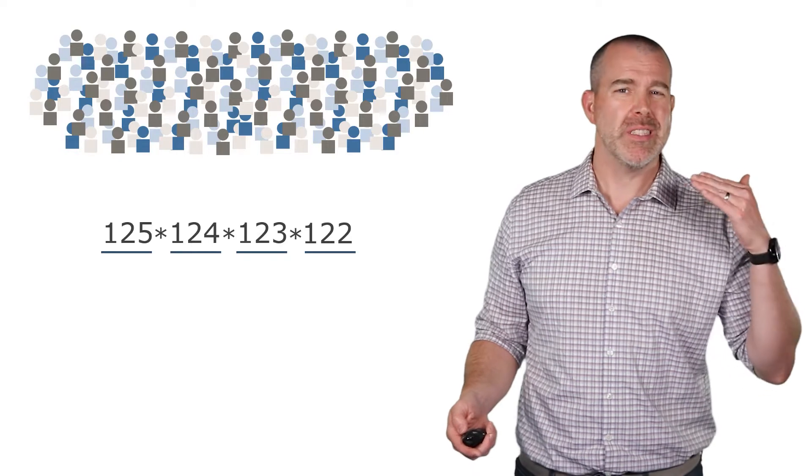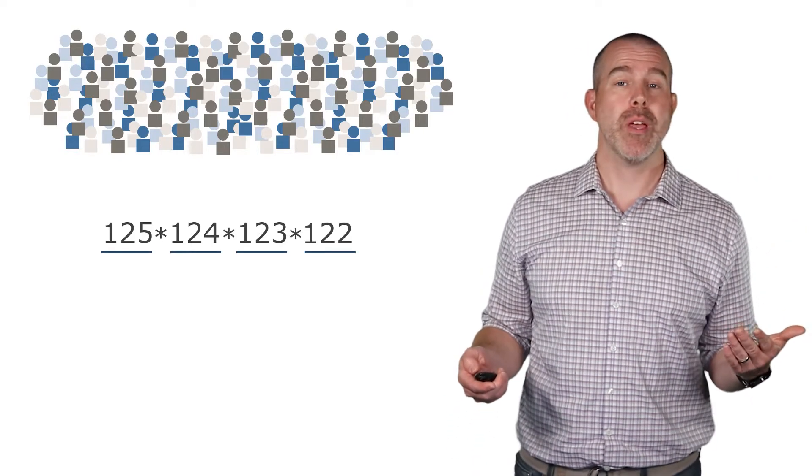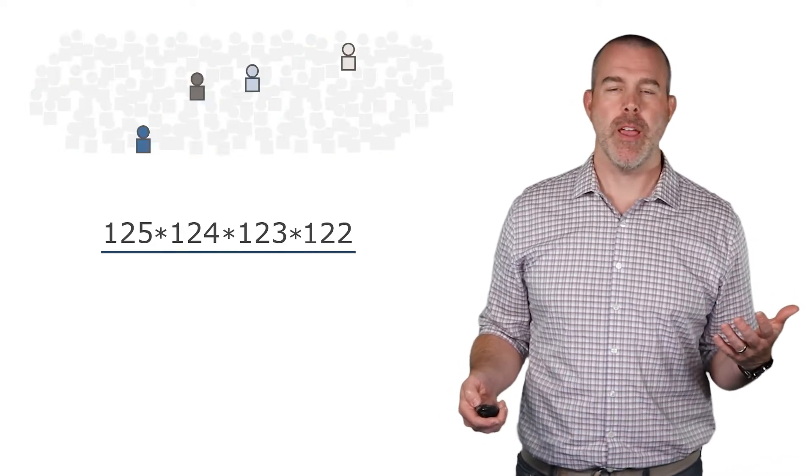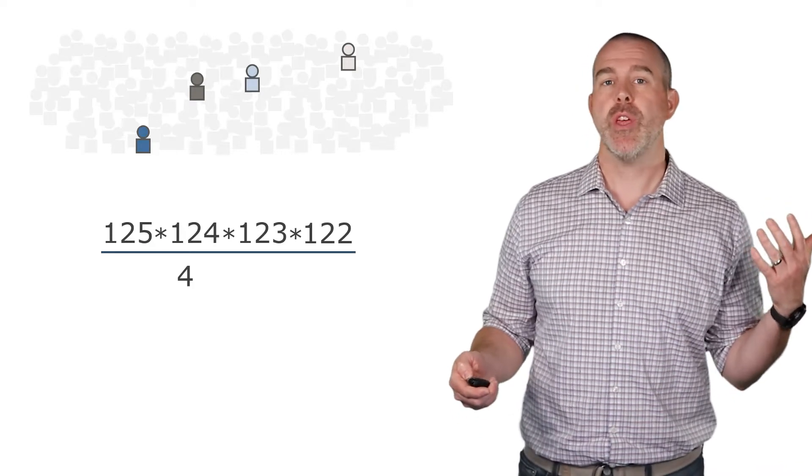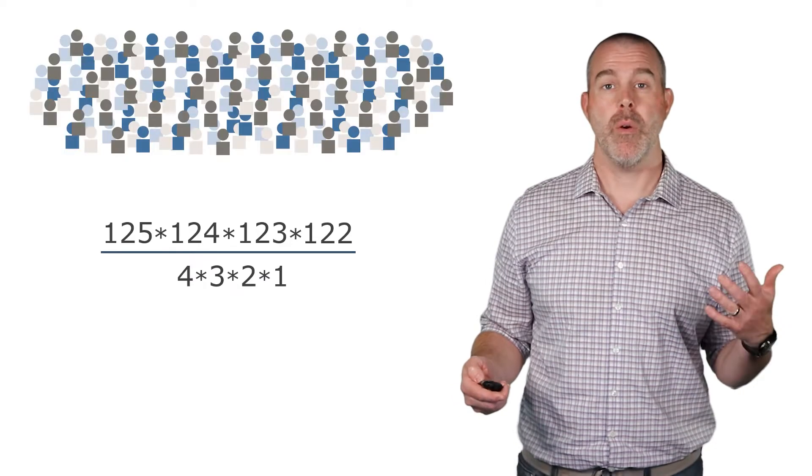So what we want to do is we really want to divide by the number of ways that those four people can be ordered. Let's say we have these four right here. Well, there's four choices for the first person. Then there's only three choices for the second person, then two, then one.